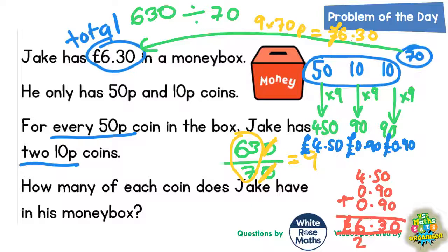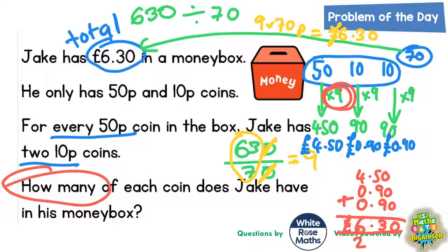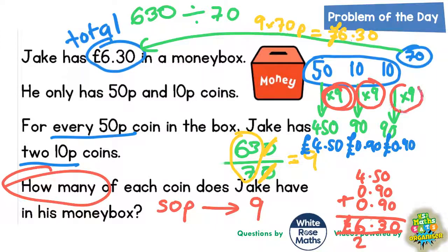All we need to do now is say how many of each coin Jake actually has. The 50p coins: he's going to have 9 of those. And the 10p coins — he's got 9 ten-pence coins there, plus another 9 ten-pence coins. So that's 9 plus 9, which makes 18. So the answer is 9 fifty-pence coins and 18 ten-pence coins.